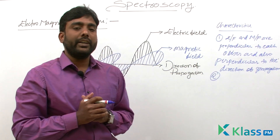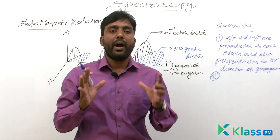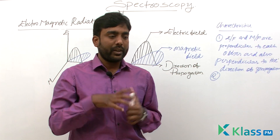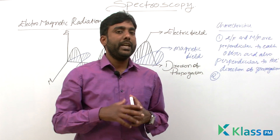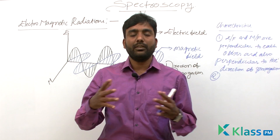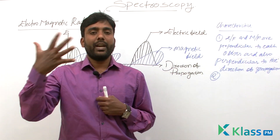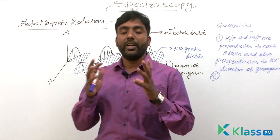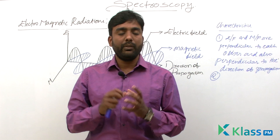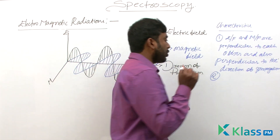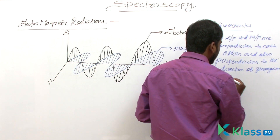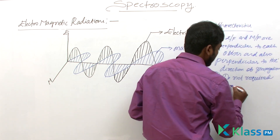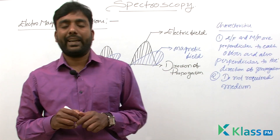The second characteristic: electromagnetic radiations do not require any medium, unlike sound waves. Sound waves require a medium — for example, if there were no medium like water, solid, or gas, you could not hear speech. But electromagnetic radiations do not require any medium for their propagation. This is the second characteristic.